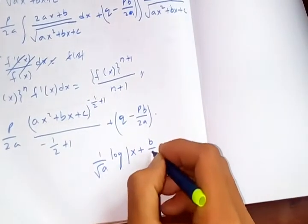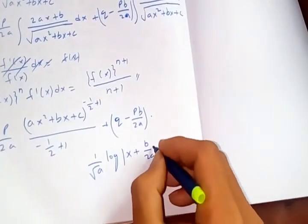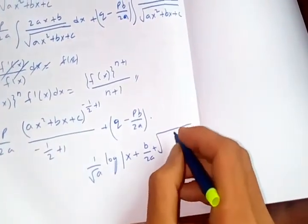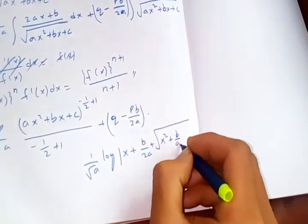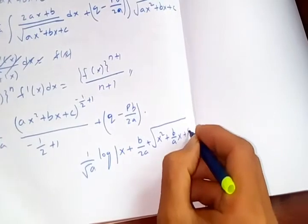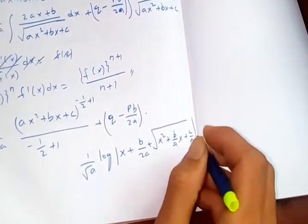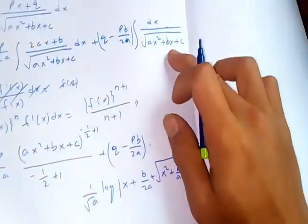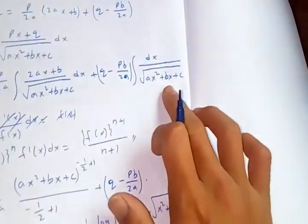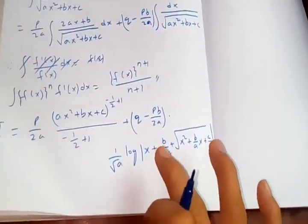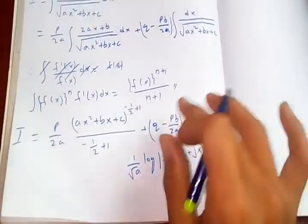x plus b over 2a plus square root of x square plus b over a x plus c over a. You can check out my video on the previous that I have proved this one already.